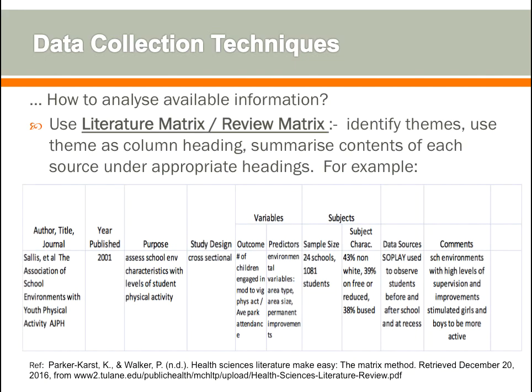How do we analyze available information? The common approach is literature metrics or review metrics, in which we identify themes and use them as column headings, then summarize the content of each source under the appropriate headings, as shown in this table.